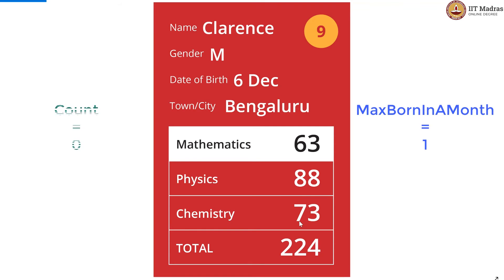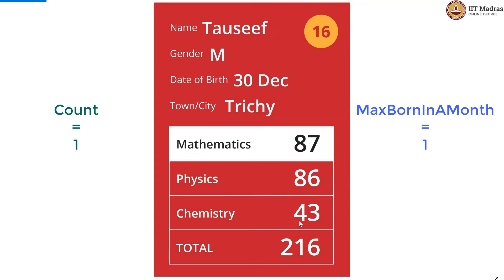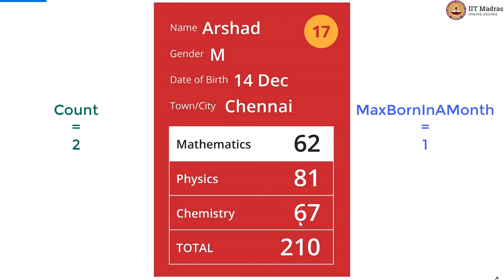count is now re-initialized to 0 because the month has changed, and incremented by 1 for the month of December. That is 2 December cards, so count is 2. Then 3 December cards, so count is 3.